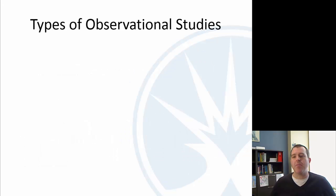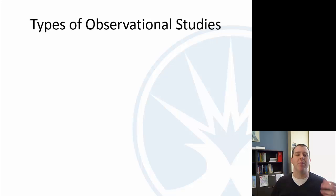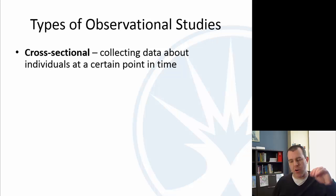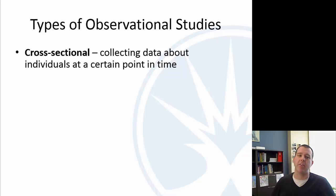Let's talk about types of observational studies. These are good things to know and to have been exposed to, though I don't test heavily on them — if they come up later in your studies, having been exposed to them is sufficient. A cross-sectional study is basically a survey where you collect data at a certain point in time and that's it. You just have that one point in time, and you're done.